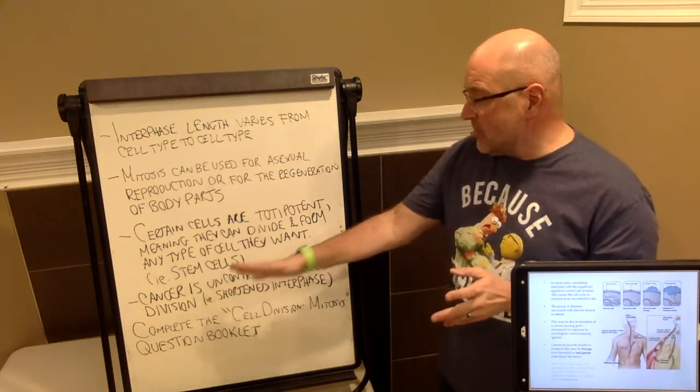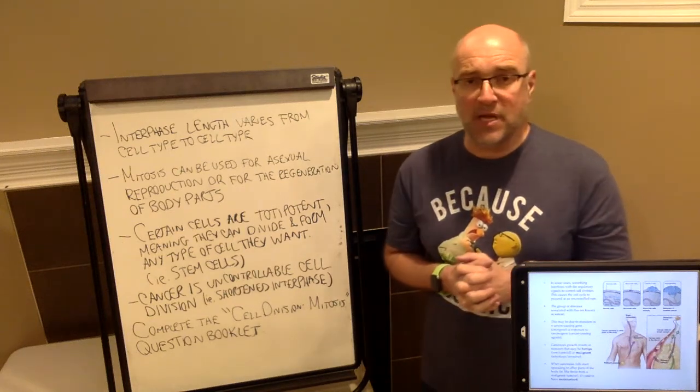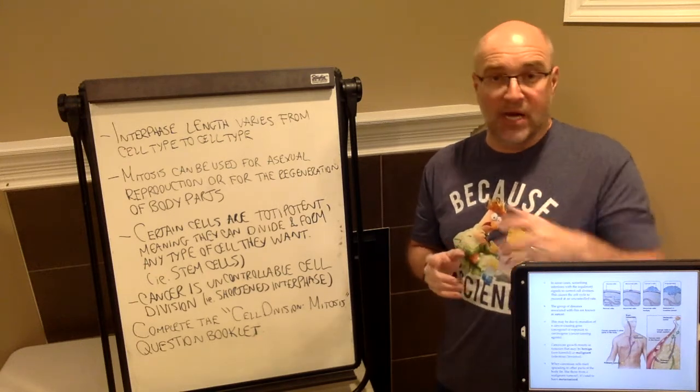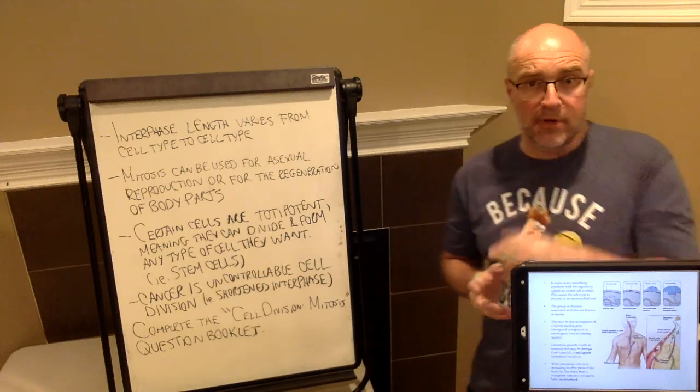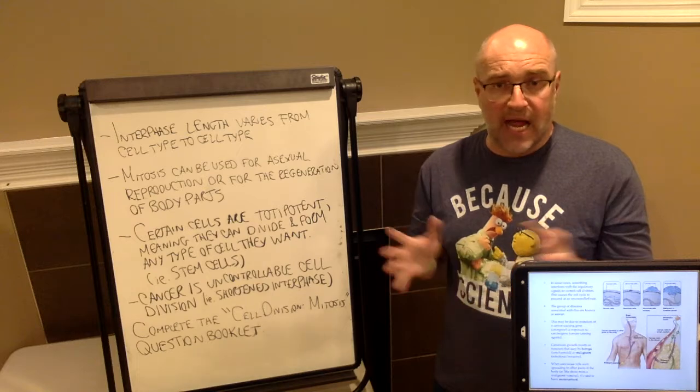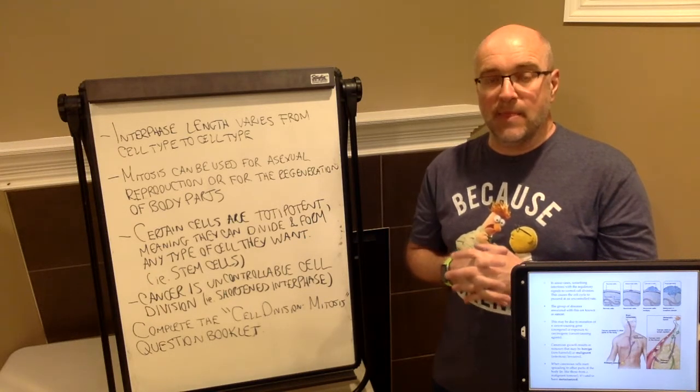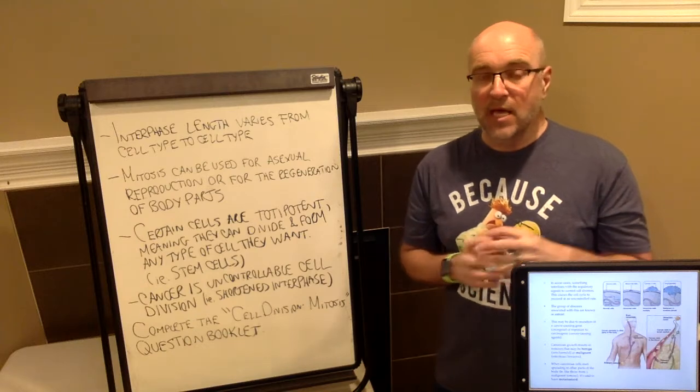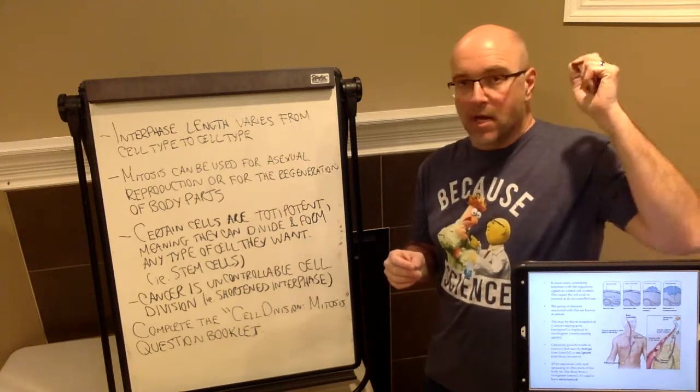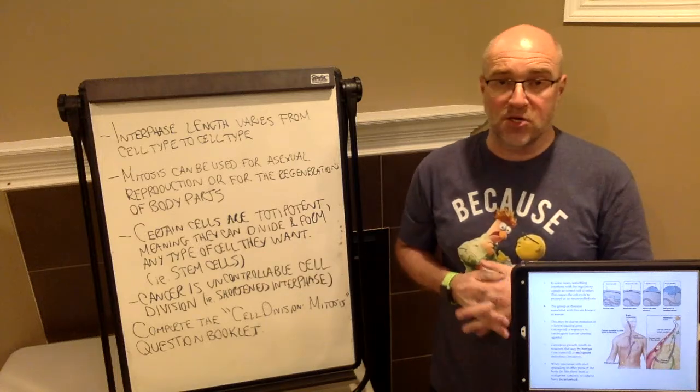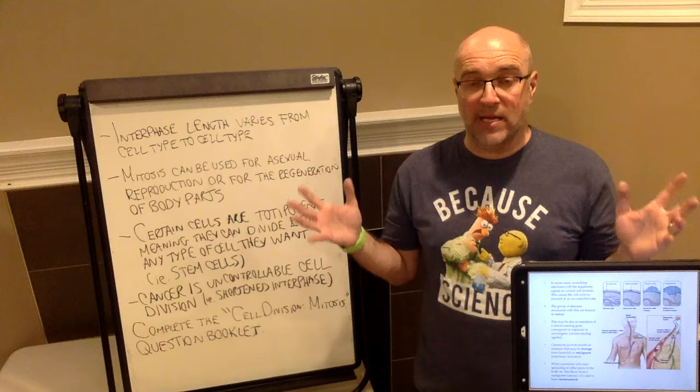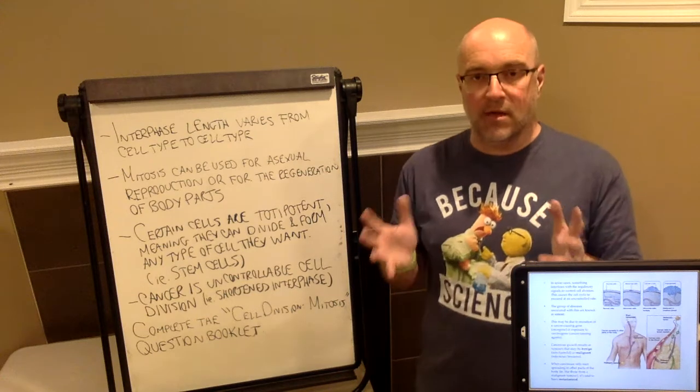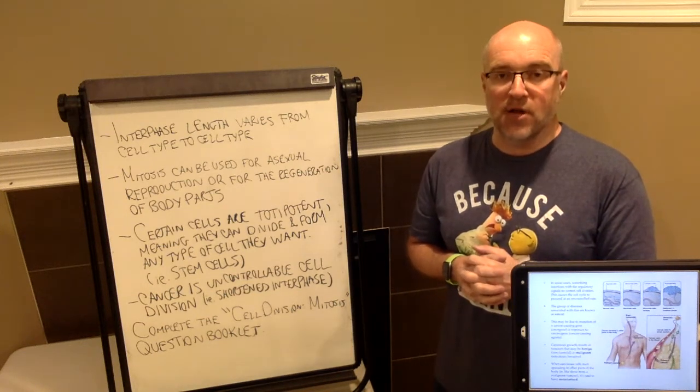And one last thing about mitosis, cancer. Any discussion about cell division would not be completed unless you discuss cancer. We've discussed cancer quite a bit in earlier units. Essentially, cancer is just uncontrollable cell division in the body. What happens is the cells that become cancerous have a very shortened interphase and they just basically go right from G0 into G1 immediately to S phase and then into G2 and then they go right into another M phase event and they just continually reproduce. And that would be the tumor.